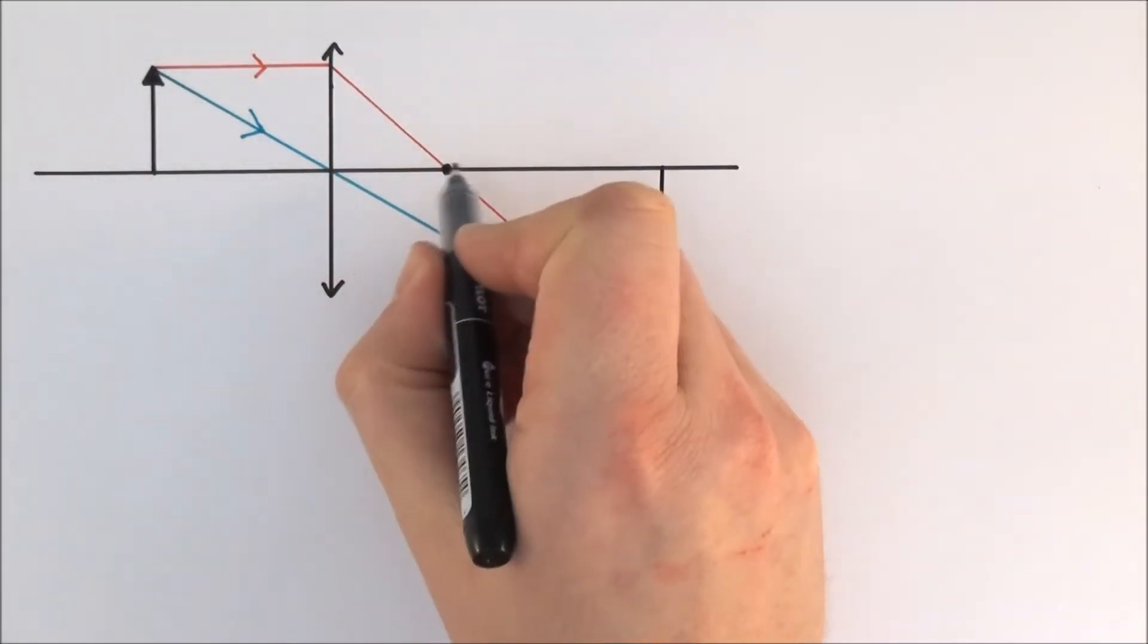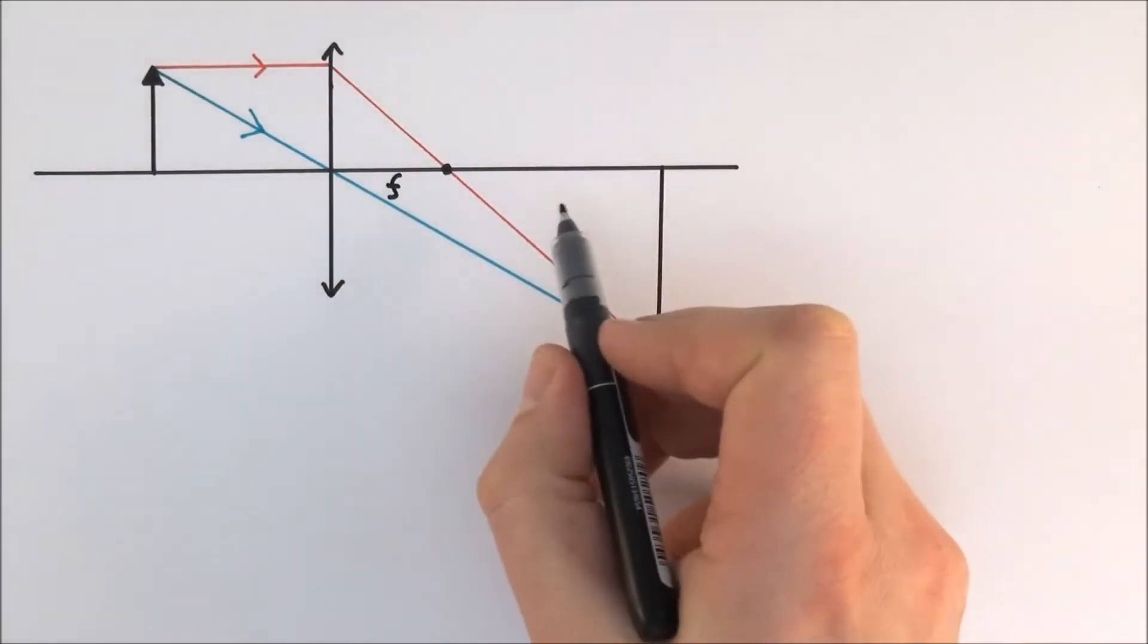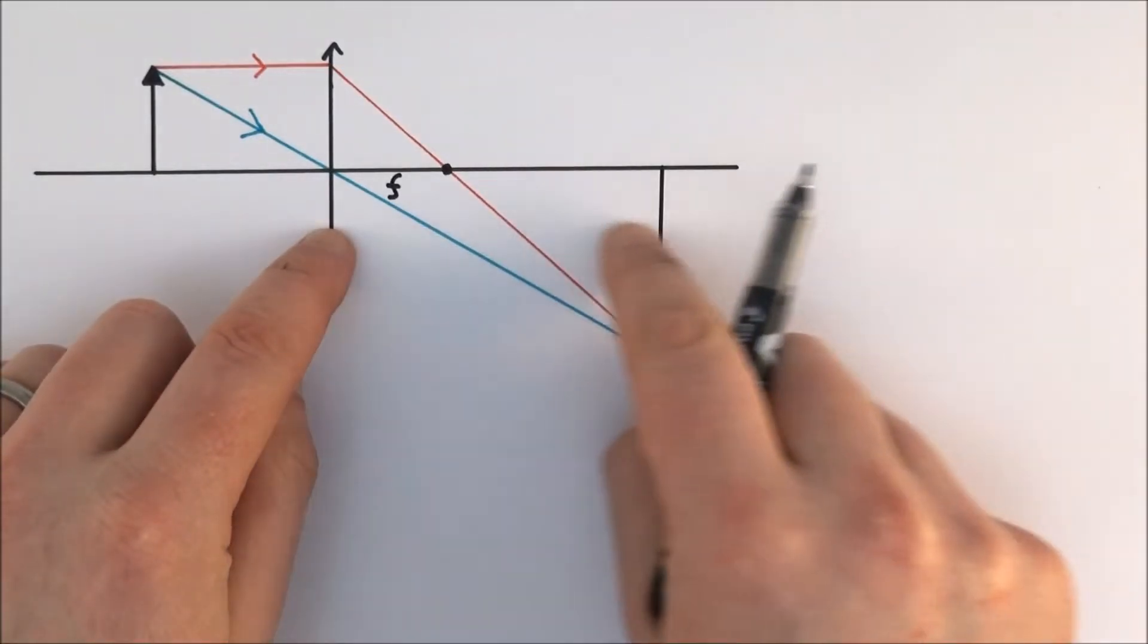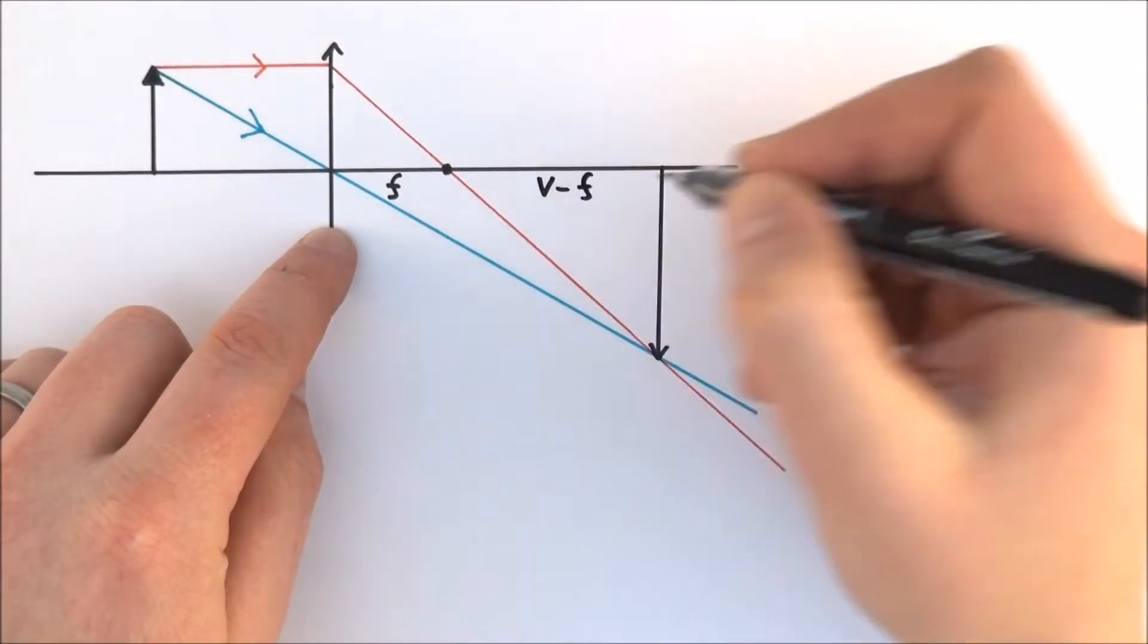First of all, the distance from the lens to the focal point is the focal length which is f, and the distance between the focal point and where the image is formed, well if this is the total distance of v, this distance here from the dot over to here is equal to v minus f.